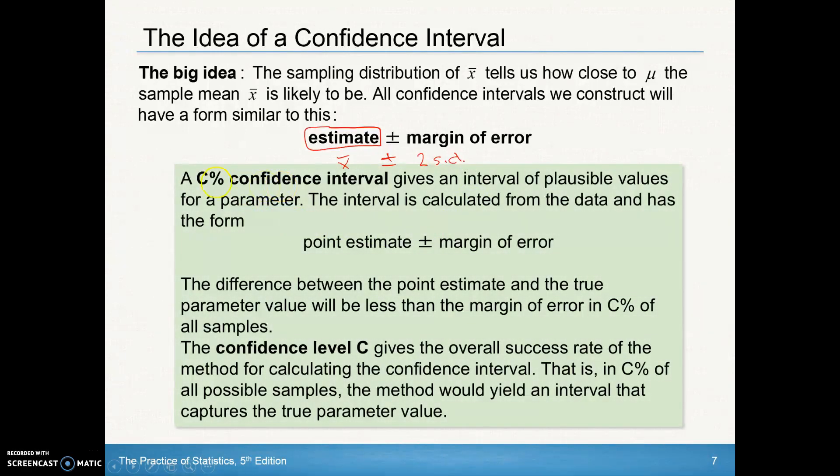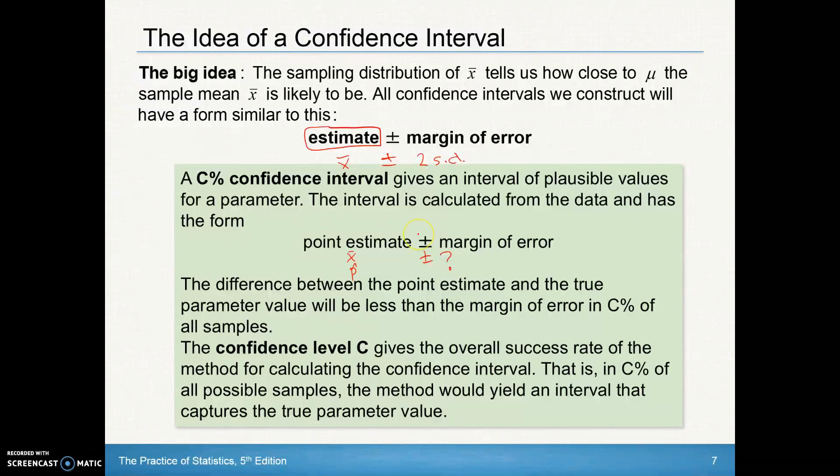So a C% confidence interval, or like we had here, a 95% confidence interval, gives us an interval of plausible values for a parameter. The interval is calculated from the data and has the form, we take that point estimate. And in this case, what we've been looking at so far, our point estimate is either x-bar or p-hat. And the margin of error is going to be plus or minus so many standard deviations. You don't know how many you want to do, depending on how confident you want to be, but you'll have so many standard deviations above or below. The difference between the point estimate and the true parameter value will be less than the margin of error in C% of all samples.